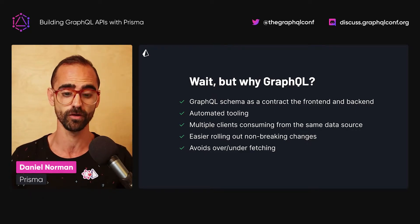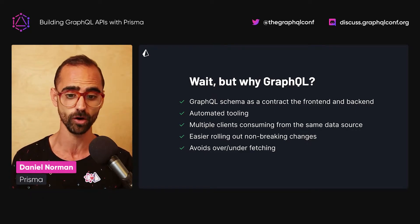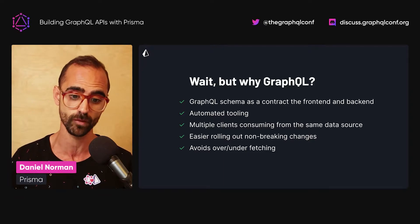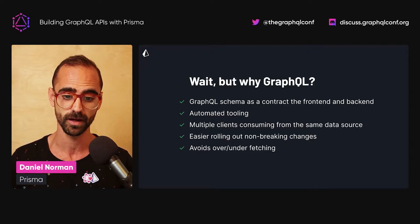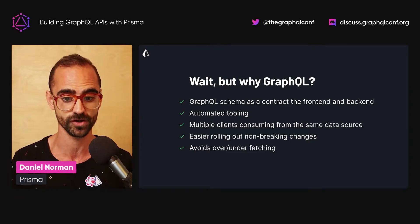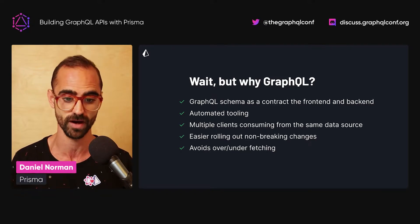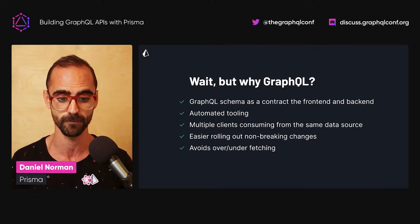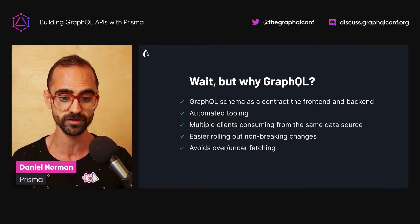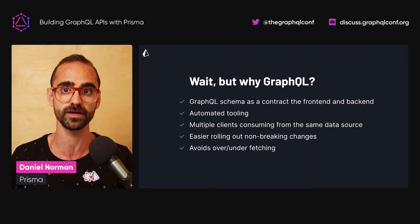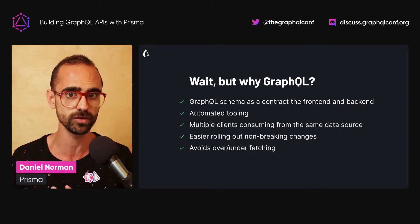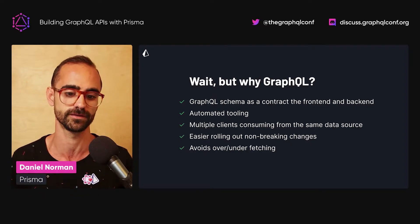You have GraphQL code generators that generate types from your GraphQL schema. You also have things like GraphQL Voyager that allow you to visualize your GraphQL schema. Essentially the schema is parsable, and using an abstract syntax tree of your GraphQL schema, you can do a lot of things.